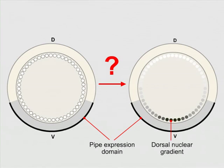marked here in gray, and culminating in a gradient of nuclear localization of the protein dorsal within the ventral embryonic nuclei.